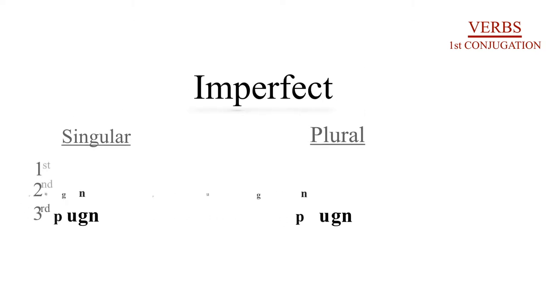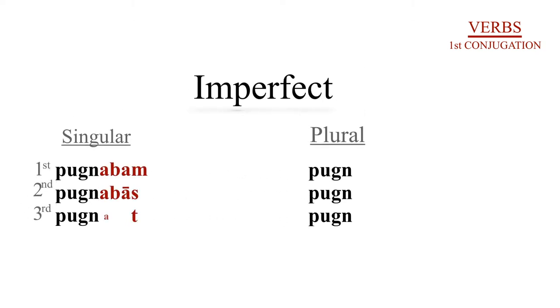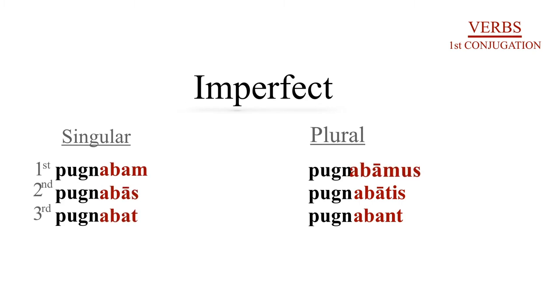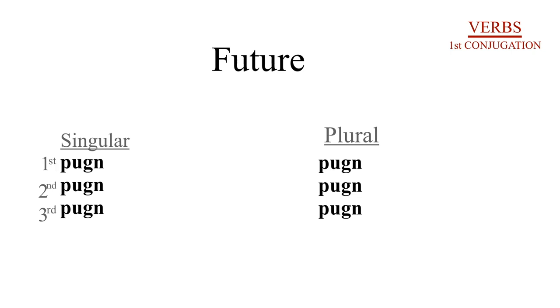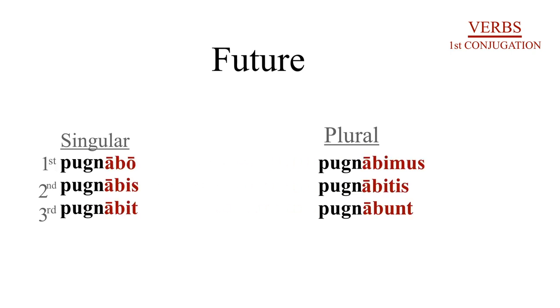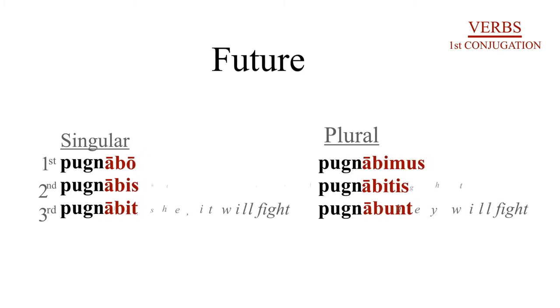Now we turn to the imperfect. This is an incomplete action happening in the past. So what we're doing is keeping the stem, adding the theme vowel, a, and personal endings appropriate to the imperfect: -bam, -bas, -bat, -bamus, -batis, -bant. Now if we look to the future, we'll notice that we still have that stem plus our theme vowel, a, but we've changed the endings to -bo, -bis, -bit, -bimus, -bitis, -bunt.